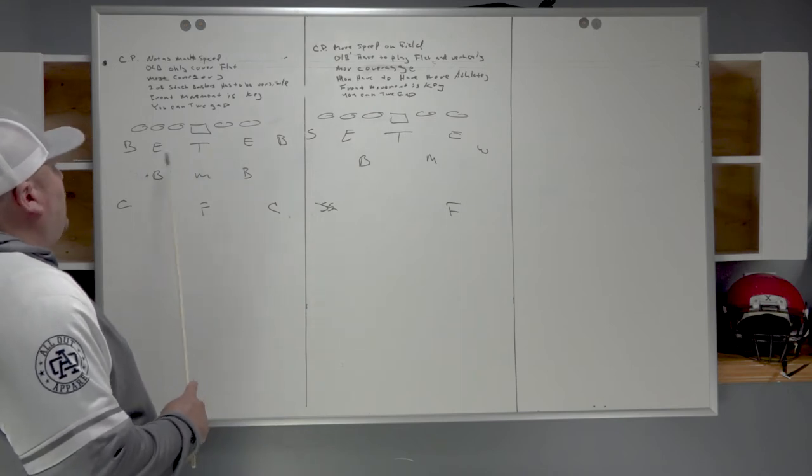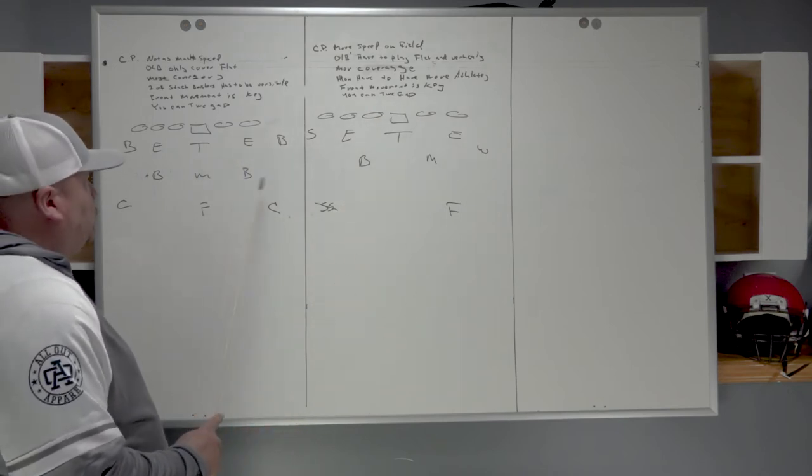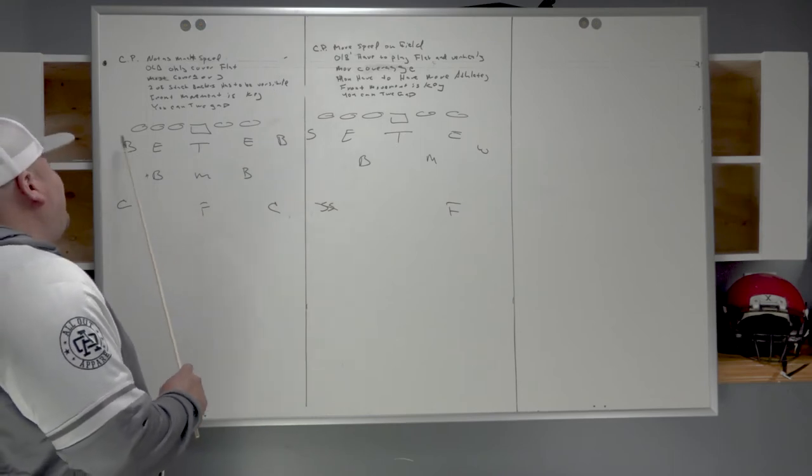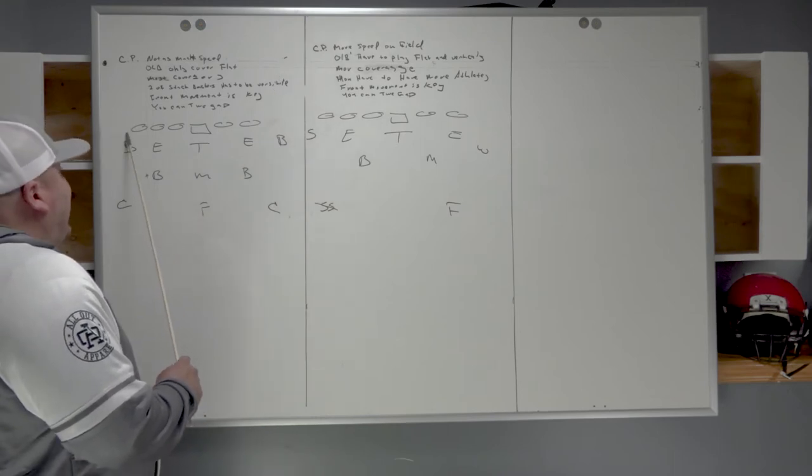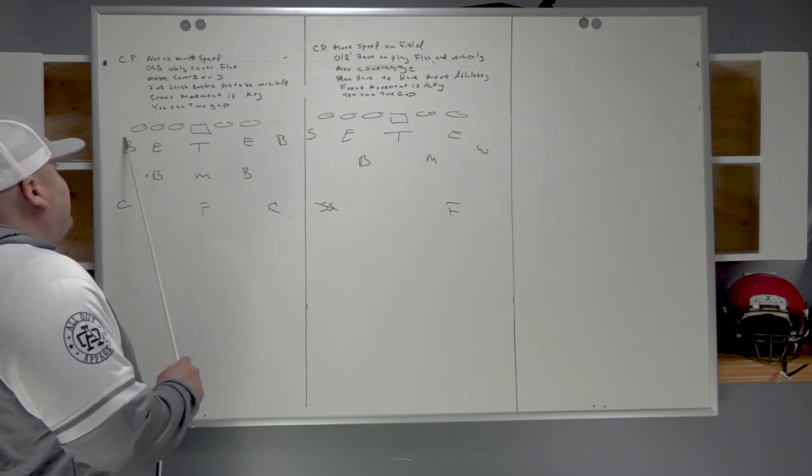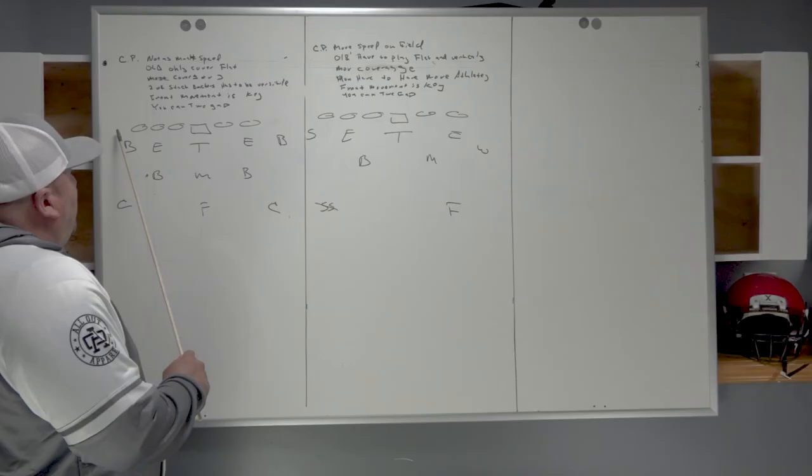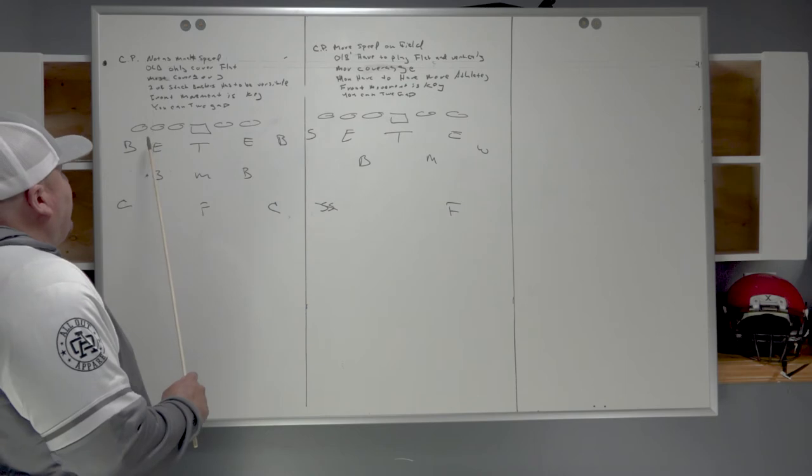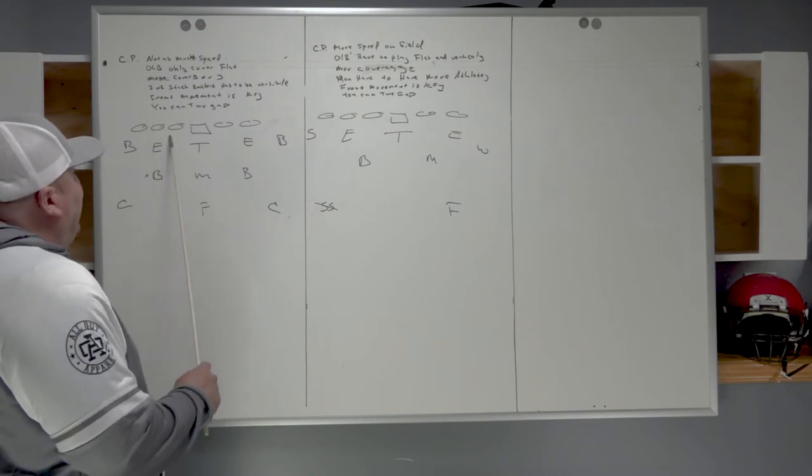Front movement is key here. You can also in either situation two-gap. What I mean by front movement is if we want to bring the outside linebacker from the left side, we would tag his name. Let's say we're going to bring the backer. Backer closed - we call it closed because it's tight end here and this is open.